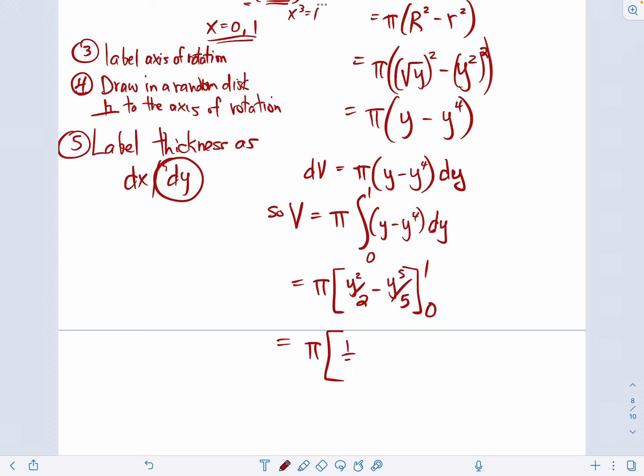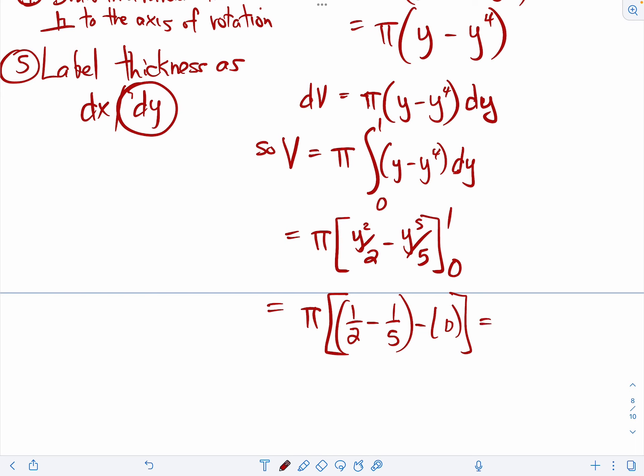That means we've got pi times. Now I put in a one, that's one half minus one to the one fifth minus, that's nice. When zero is your lower limit of integration. That's fun to deal with. That means it's pi times one half minus one fifth, which is one half is five tenths. One fifth is two tenths. We're looking at three tenths pi or three pi over ten. That is our answer. That is the volume of that region.